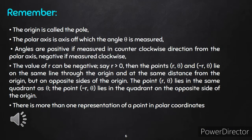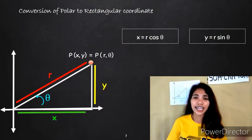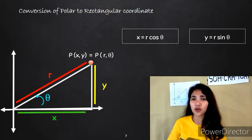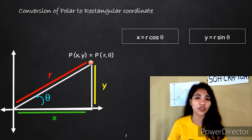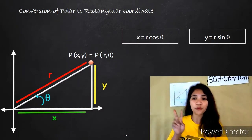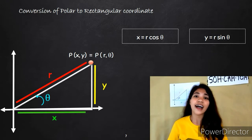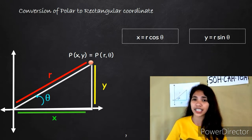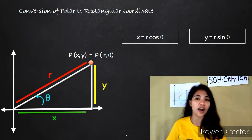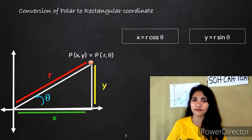Here are the things to remember in converting polar to Cartesian coordinates and vice versa. In converting polar to Cartesian coordinates, we need two formulas: x is equal to r cosθ, and y is equal to r sinθ.